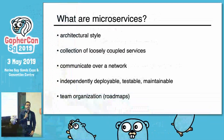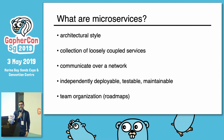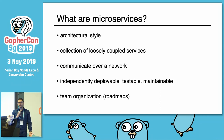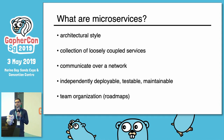Microservices are an architectural style. There's no formal definition for it that I could find. It's a collection of loosely coupled services — they usually communicate over a network. They're independently deployable, testable, and maintainable, and it could be multiple teams working on them together concurrently on different parts of a whole system.